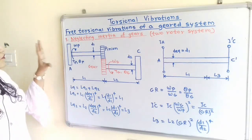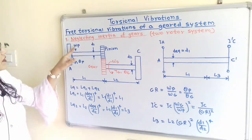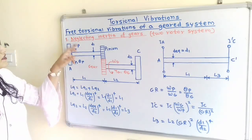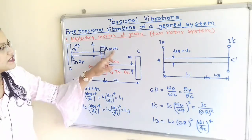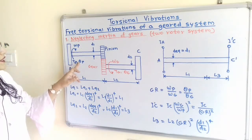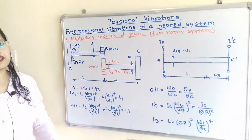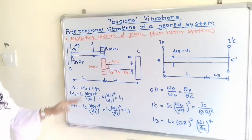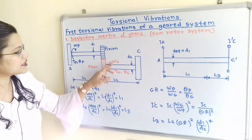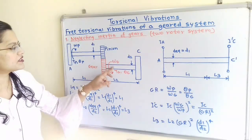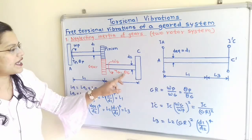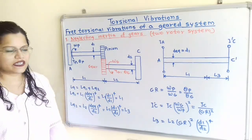For the first shaft, the angular velocity is omega P, where suffix P is used because it is connected to the pinion. The torque is Tp and theta P is the angular displacement. For the second shaft, the angular velocity is omega G because the shaft is connected to the gear, and the torque is Tg with angular displacement theta G.